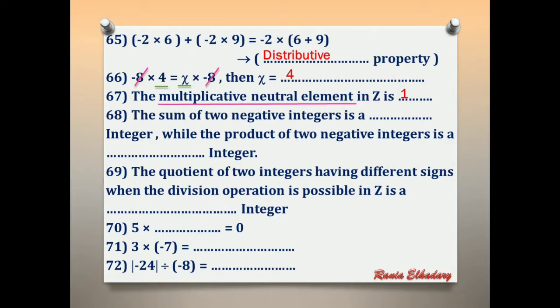Number 68: the sum of two negative integers — negative plus negative with the same sign equals negative. The product of two negative integers is positive. Negative times negative equals positive.